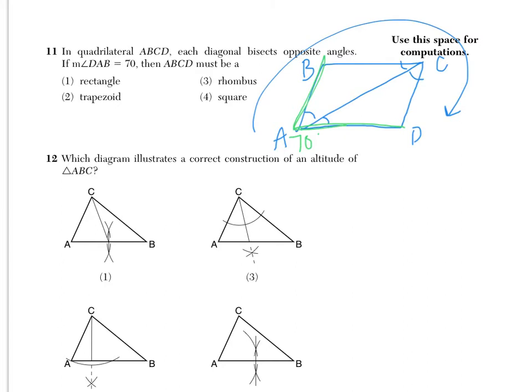It says the measure of angle DAB is 70 degrees. So here, angle DAB, the whole angle is 70 degrees. This means that we can actually eliminate two options. We can get rid of rectangle and we can get rid of square. Because this angle DAB in a rectangle and a square would have to be a right angle. If you think about sketching them, those angles are right angles. DAB being 70 is, of course, not a right angle.